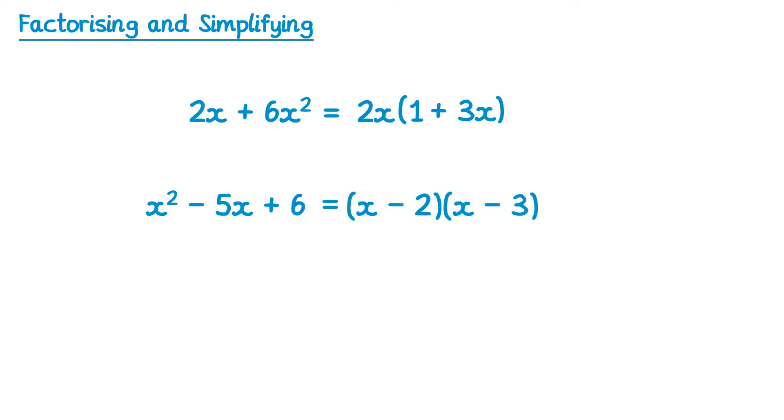You should also recall the difference of two squares. Notice how both of the terms here are squares. You've got 4x², which is 2x times 2x, and 9y², which is 3y times 3y. This can factorise as (2x + 3y)(2x - 3y).